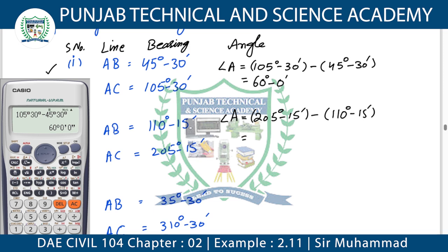Subtract this to solve this point as well. The important thing to note is that the bearing with the largest value should be placed first. We will not get a negative value here. So note that this comes to 95 degrees — this is our second point's bearing, which is 95 degrees, 0 minutes.